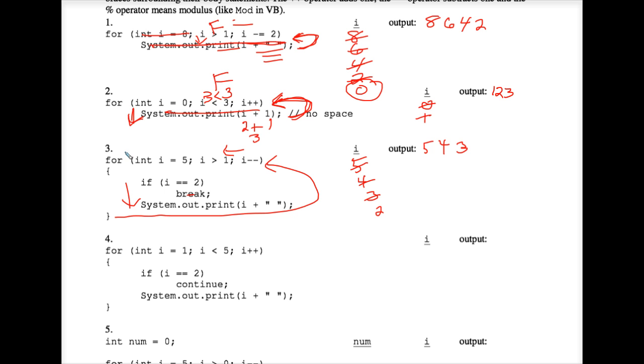When you hit a break, that breaks you out of the loop that you're currently in. So we never system out print anymore in this exercise. We are finished because of that break. Circling the final value of I there and noting that the output is 5 space, 4 space, 3 space. Moving on to number 4.